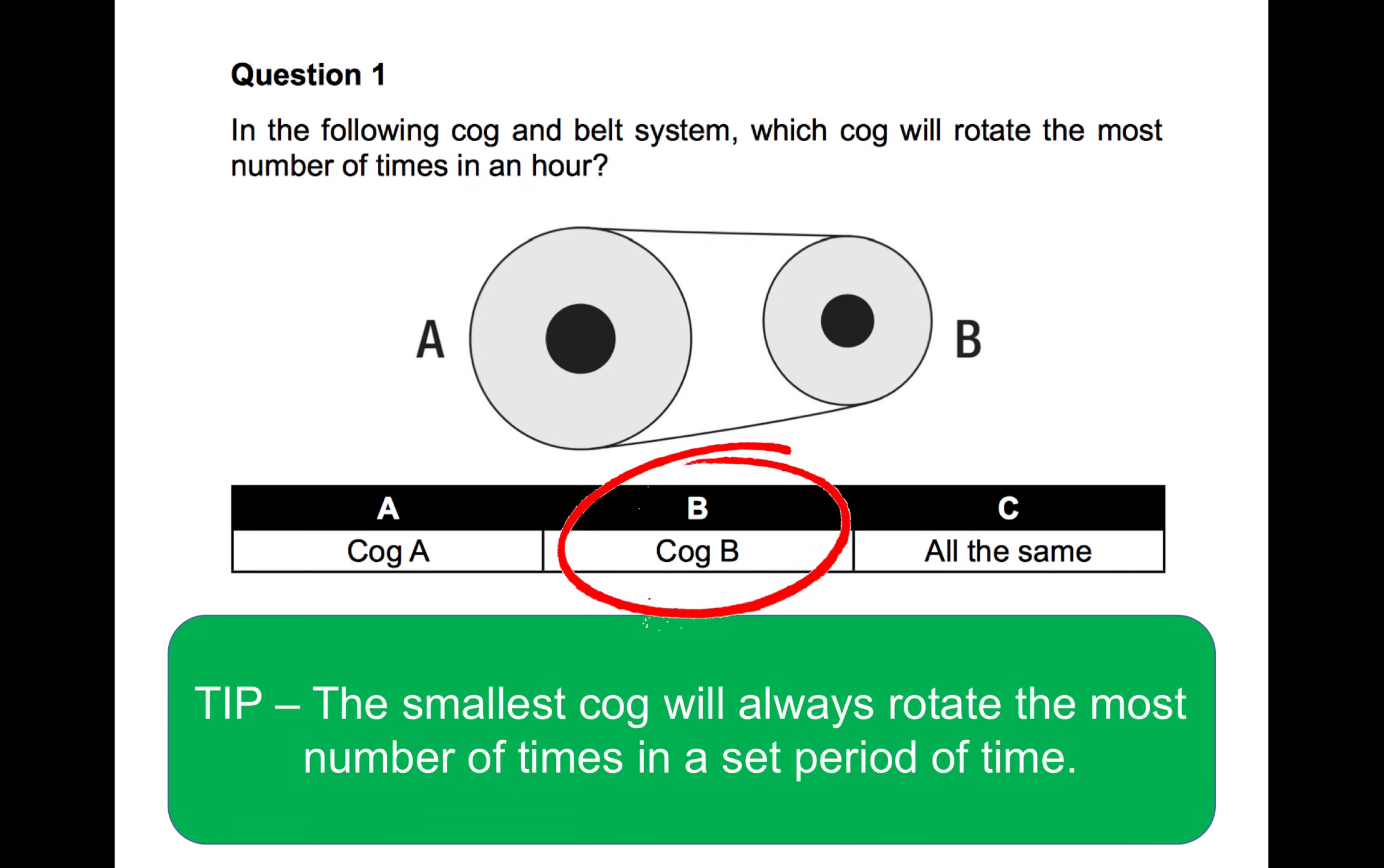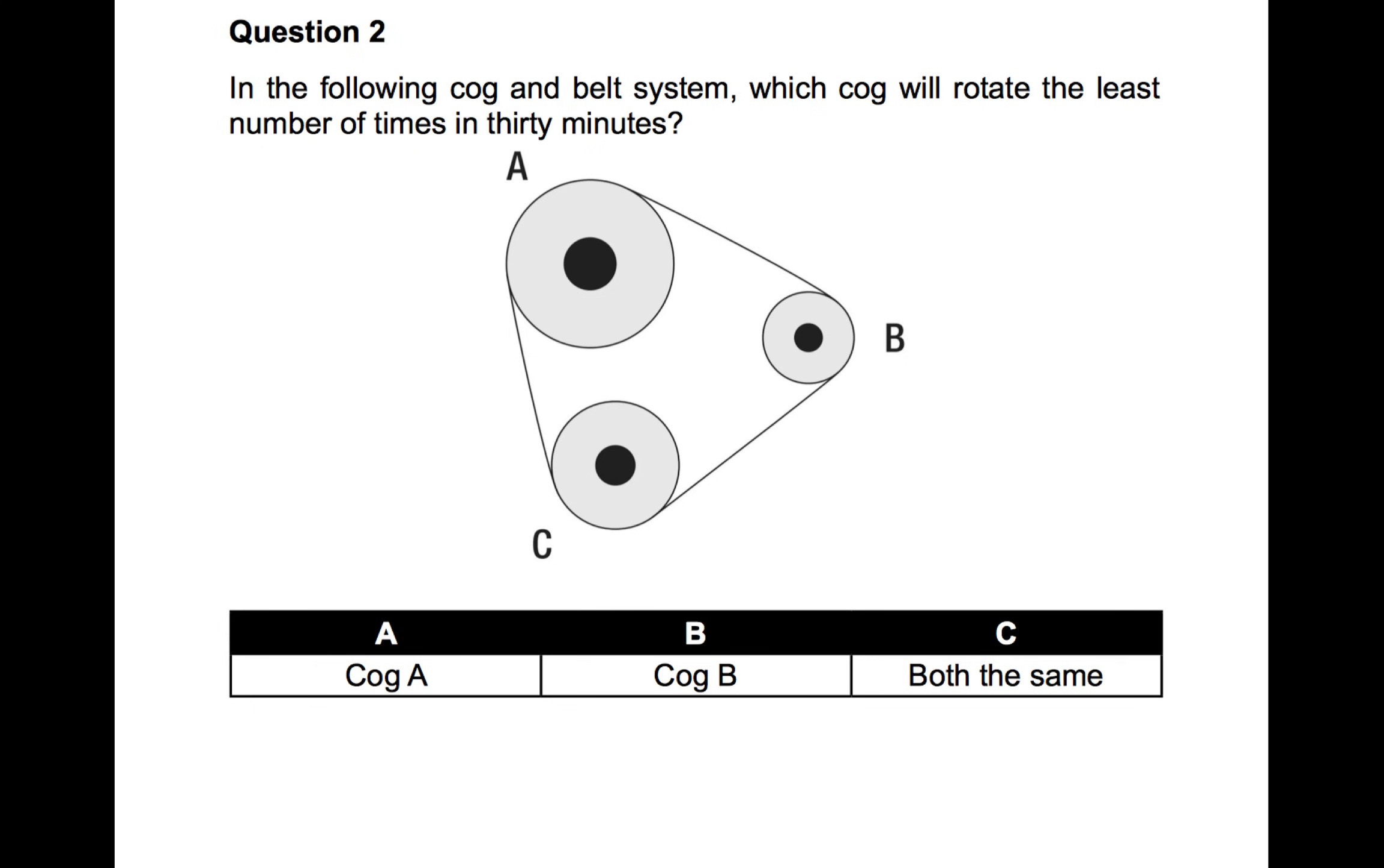Now, what you have to do is read the question really carefully. This is an important tip because it says the most number of times. What if it said rotate the least number of times? And there are variations of questions on mechanical comprehension. So you need to look out for that. Read the question really carefully. Let's have a look at question number two. Now, in following cog and belt system, which cog will rotate the least number of times in 30 minutes? So what I want you to do is to give your answer to this question in the comments box below. So put your answer in the comments below and say which one will rotate the least number of times and give a reason for your answer. So just explain based on what you've learned so far. My tip is read the question carefully. So you answer this yourself in the comments box below the video in the following cog and belt system, which cog will rotate the least number of times in 30 minutes? And remember what I've told you about the period of time. Is it relevant or isn't it relevant? And let me know in the comments below.